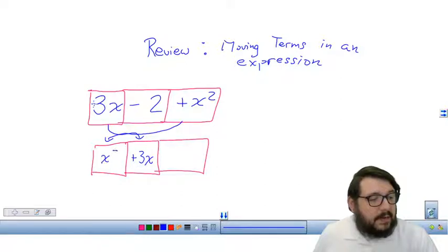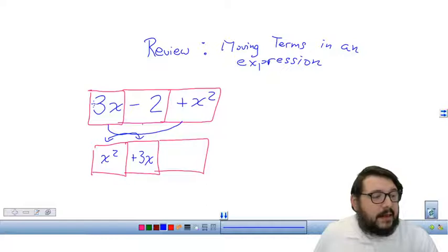So I can put x squared and again the same deal applies with the positive. Here it's at the back but now it's a lead term so therefore it gets that implied positive sign, meaning we don't have to write it. It's known that it's there. And then here I have my minus 2. And I'm allowed to do this. I'm allowed to move the terms around as long as I keep the signs consistent.